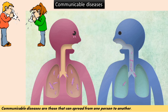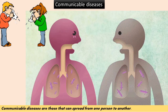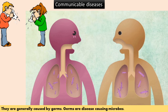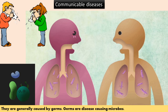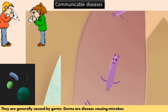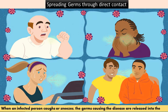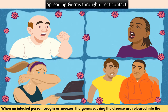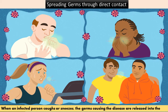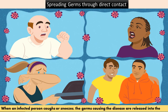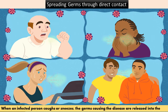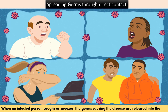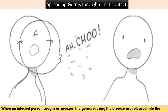Communicable diseases are those that can spread from one person to another. They are generally caused by germs — disease-causing microbes. When an infected person coughs or sneezes, the germs causing the disease are released into the air and can infect a healthy person.